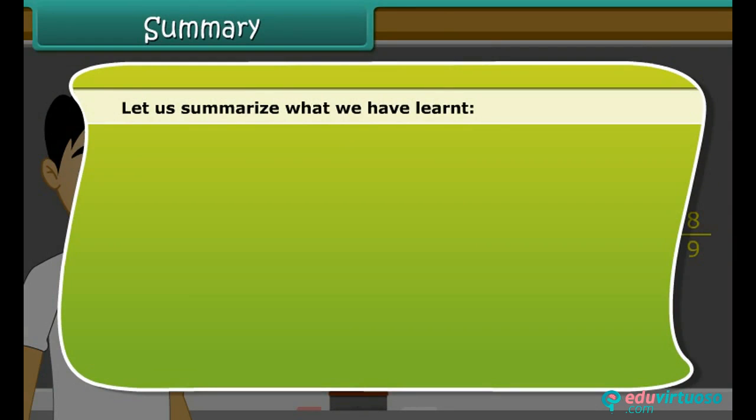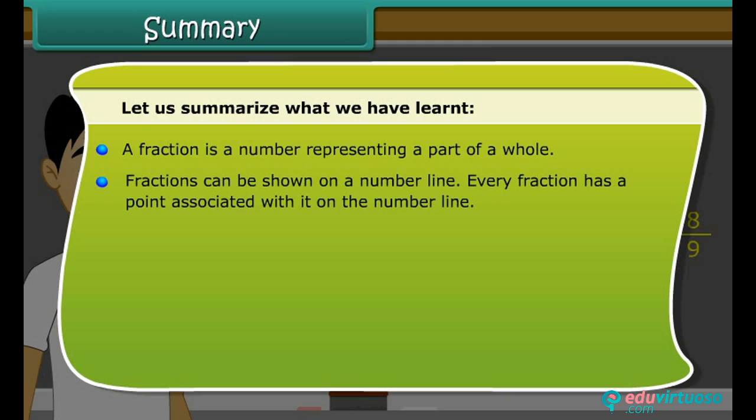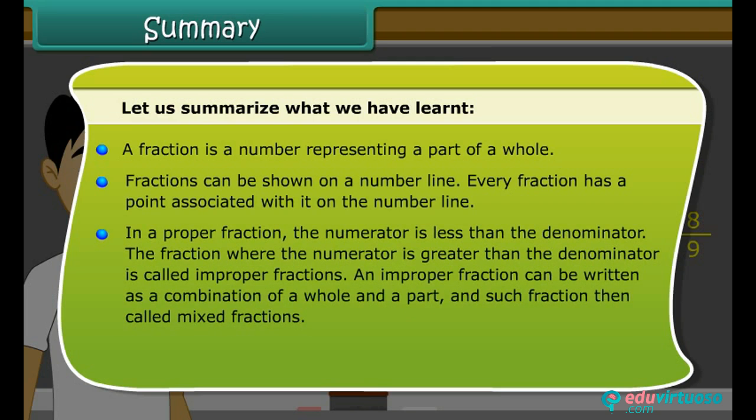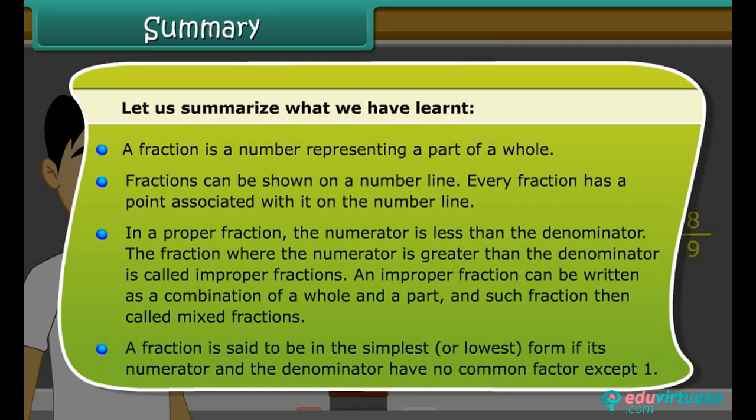Let us summarize what we have learned. A fraction is a number representing a part of a whole. Fractions can be shown on a number line. Every fraction has a point associated with it on the number line. In a proper fraction, the numerator is less than the denominator. The fraction where the numerator is greater than the denominator is called improper fractions. An improper fraction can be written as a combination of a whole and a part, and such fraction then called mixed fractions. A fraction is said to be in the simplest or lowest form if its numerator and the denominator have no common factor except one.